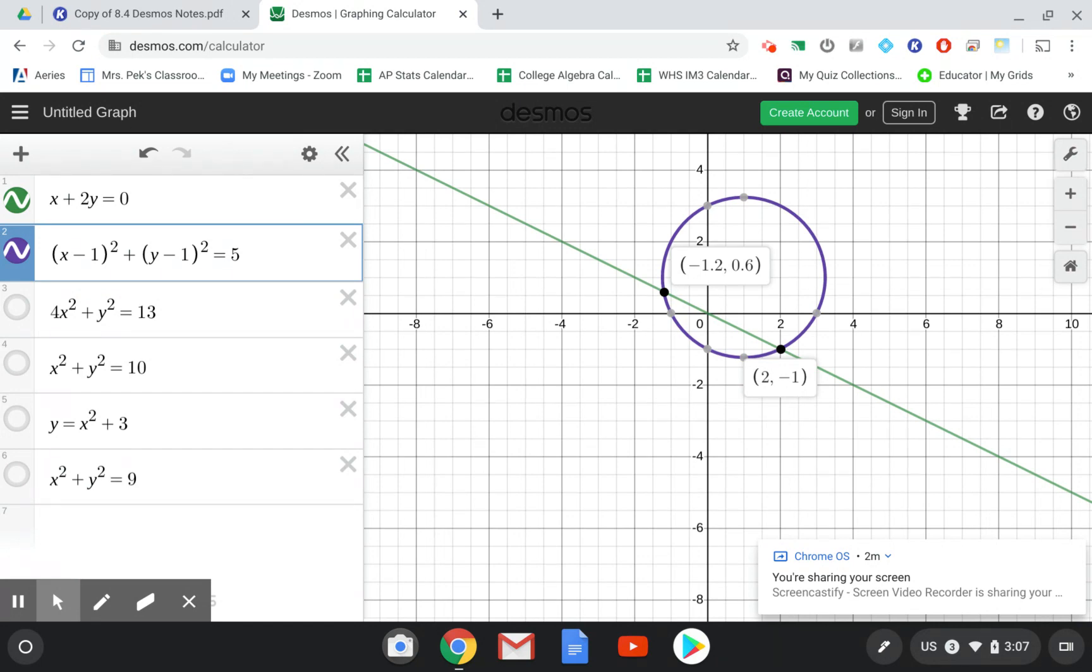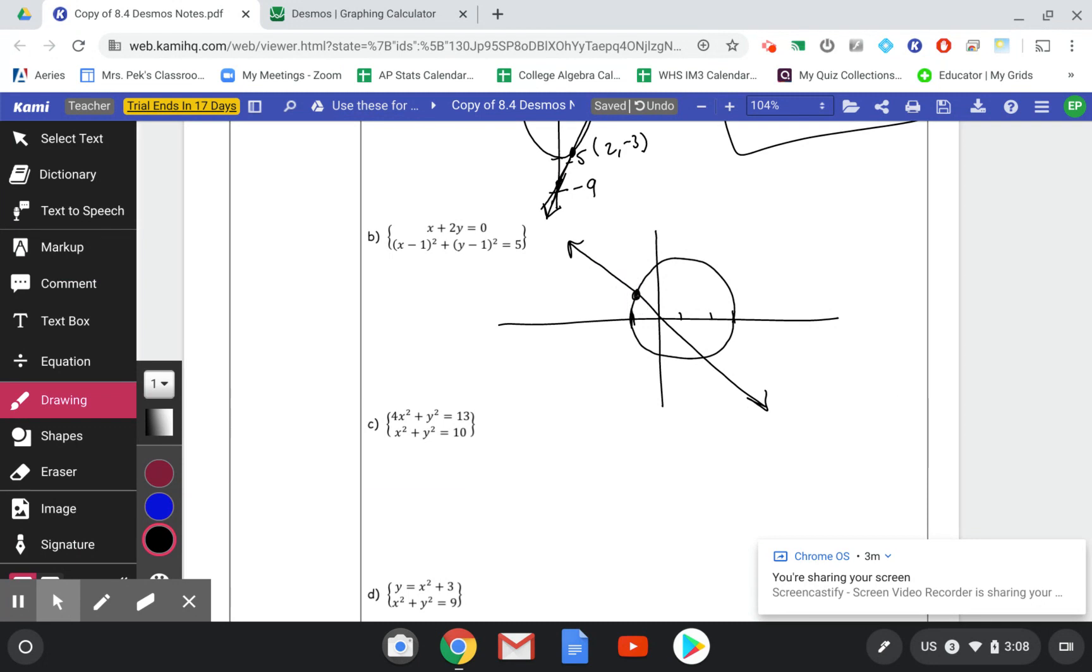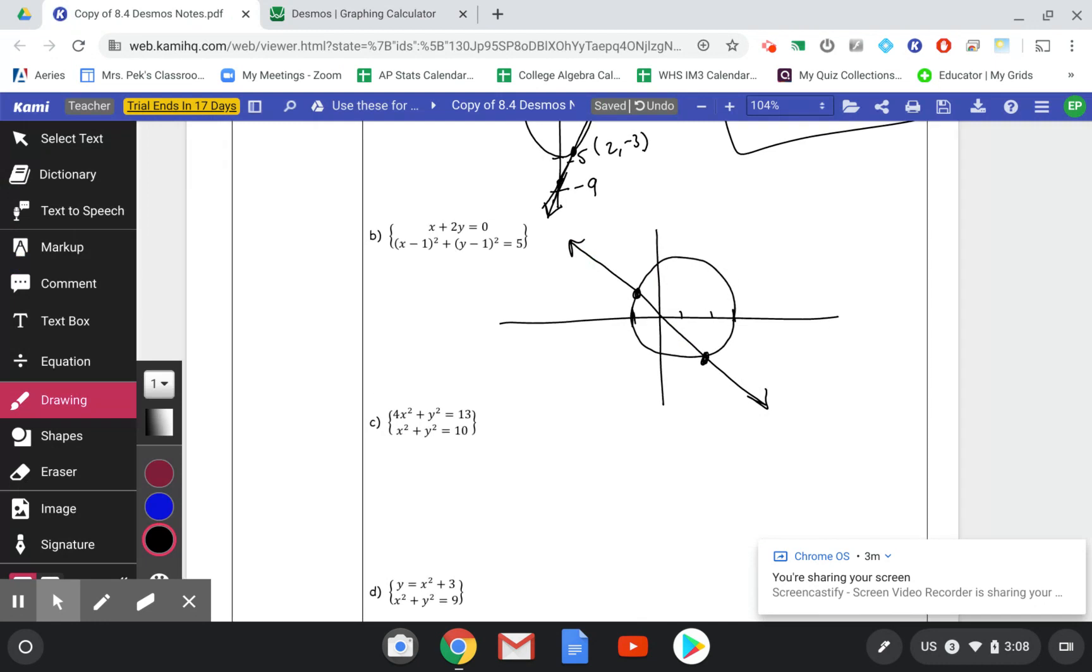All right, so then we're going to do a little sketch. You can also see that it goes through the x-axis at negative 1 and 3 on the circle. So we can kind of gauge that there. So we have a line that looks like this, going through 0, 0. And then my circle, negative 1, 2, 3, does that. And then we have these two points, which are the points 2, negative 1, and negative 1.2, and 0.6.